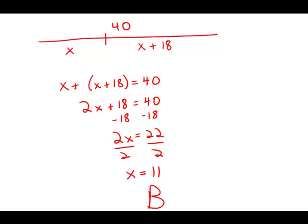The shorter length of the rope is 11. It turns out that the longer piece of the rope is 29, which is exactly 18 feet longer.